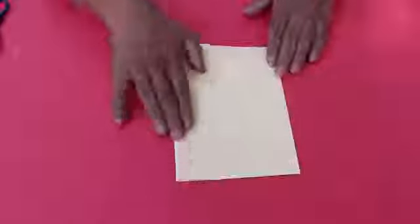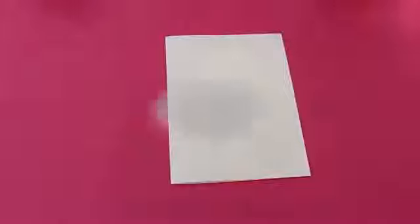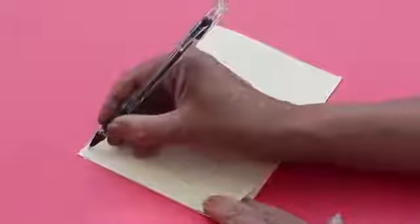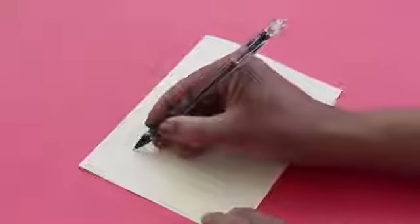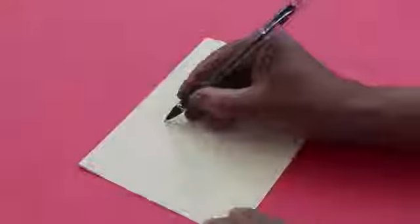First, fold the card sheet in half. Now with the fold on the top, with the help of a pen, draw the swan. First draw the neck and the beak, and then the body with the feathers.